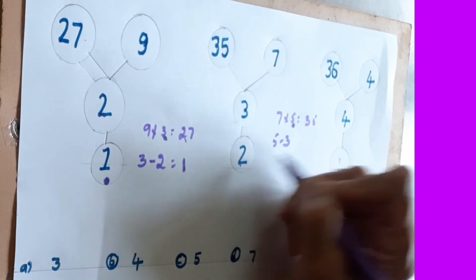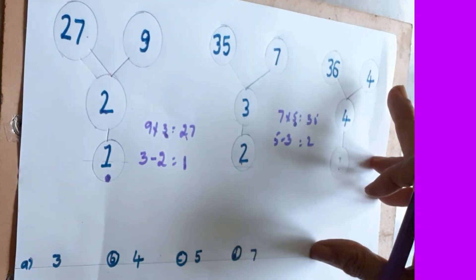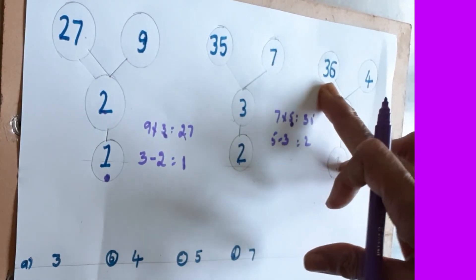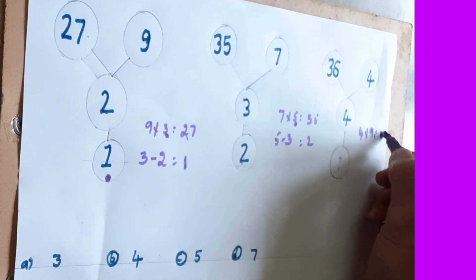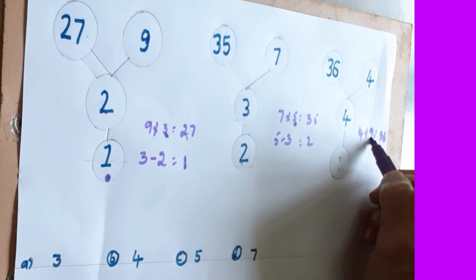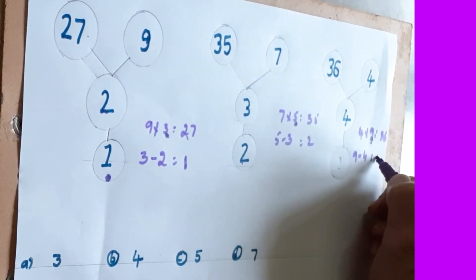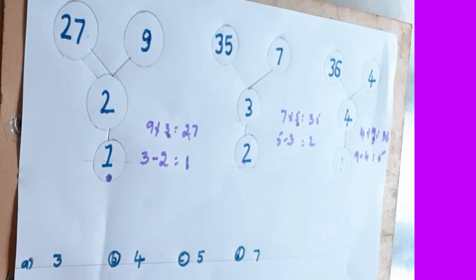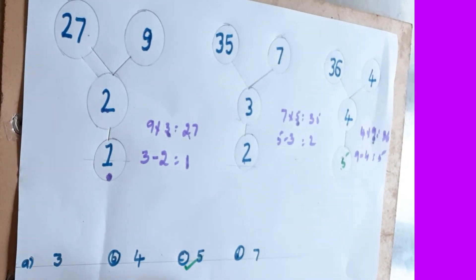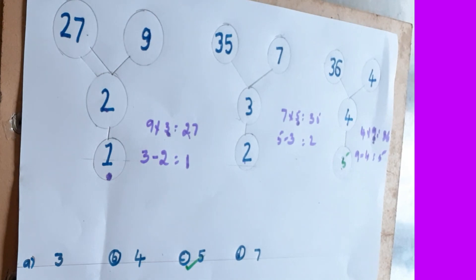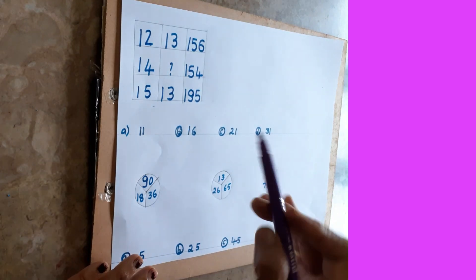Five minus 3 is what? Two — that means this logic is correct. Then now what you have to do: 4, how many times if you multiply will you get 36? Four nines are 36. What is the number you are multiplying? Here 9, with this you have to subtract: 9 minus 4 is what? Five. That means the answer here is 5 — option C. This is the correct answer.